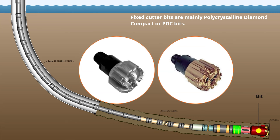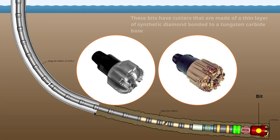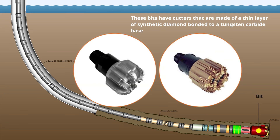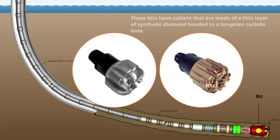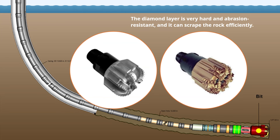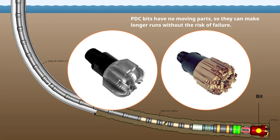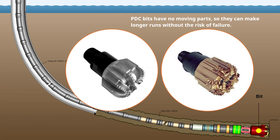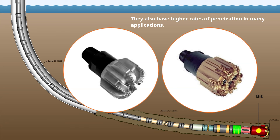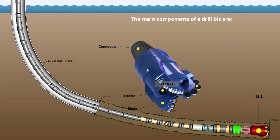Fixed cutter bits are mainly polycrystalline diamond compact, or PDC, bits. These bits have cutters made of a thin layer of synthetic diamond bonded to a tungsten carbide base. The diamond layer is very hard and abrasion resistant and can scrape the rock efficiently. PDC bits have no moving parts, so they can make longer runs without the risk of failure and also achieve higher rates of penetration in many applications.